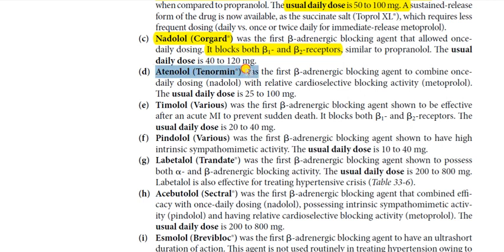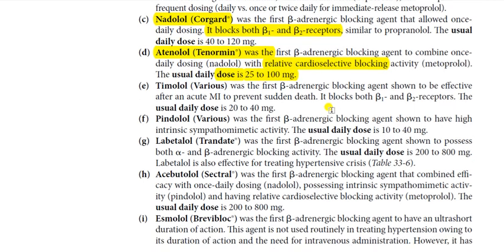Atenolol was the first beta blocker to combine once-daily dosing with relative cardioselectivity. The usual daily dose is 25 to 100 mg. Atenolol (Tenormin) is commonly used.